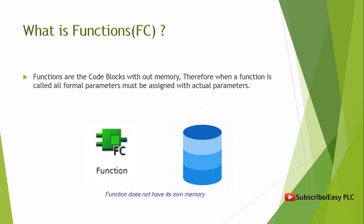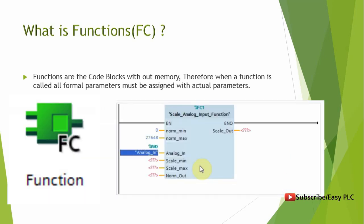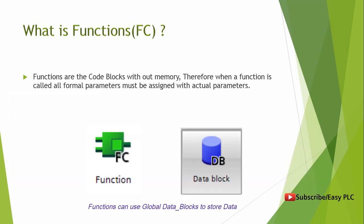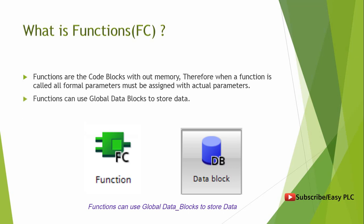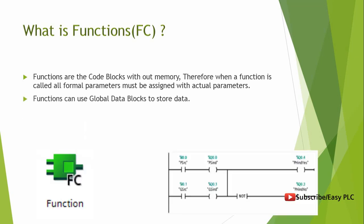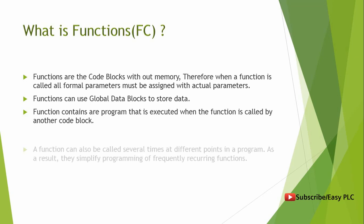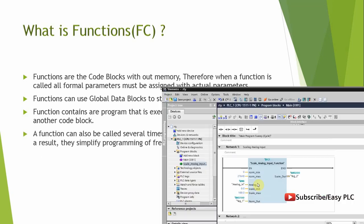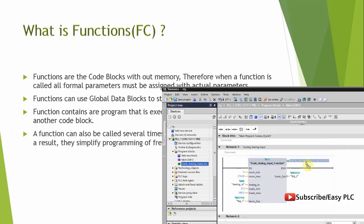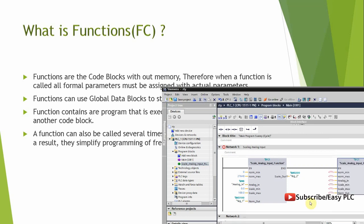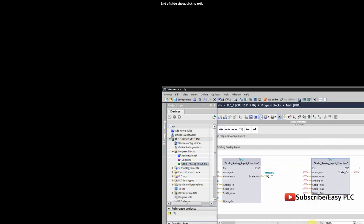Functions are code blocks without memory. Therefore, when a function is called, all formal parameters must be assigned with actual parameters. Functions can use global data blocks to store data. A function contains a program that is executed when called by another code block. A function can also be called several times at different points in a program, simplifying the programming of frequently recurring functions.